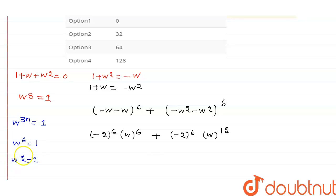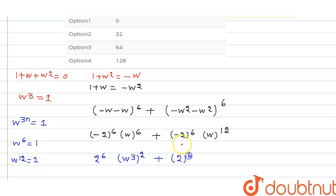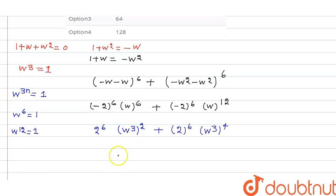We can write omega to the power 6 as (omega cubed) squared, and omega to the power 12 as (omega cubed) to the power 4. Since minus to the power 6 is positive, this becomes 2 to the power 6 plus 2 to the power 6.